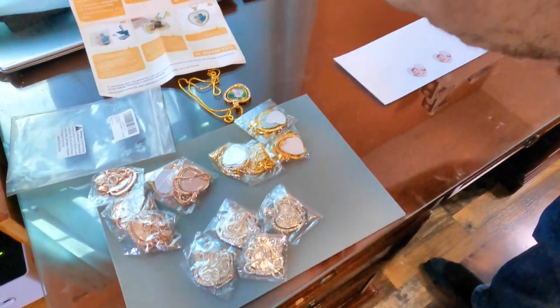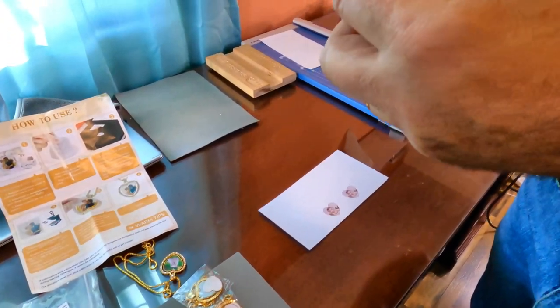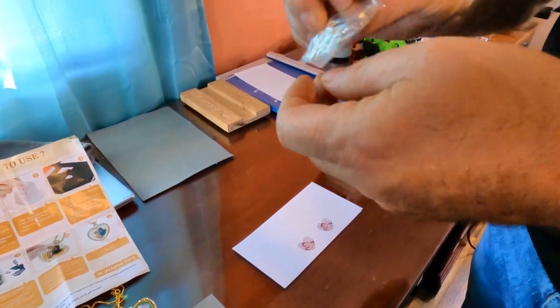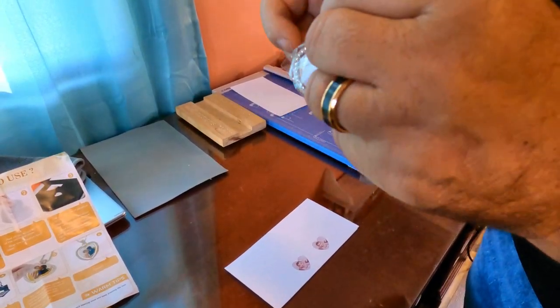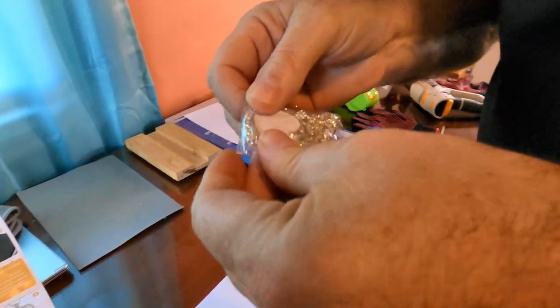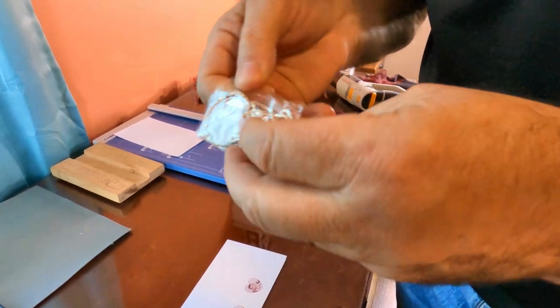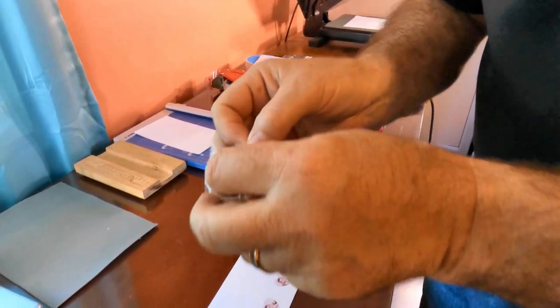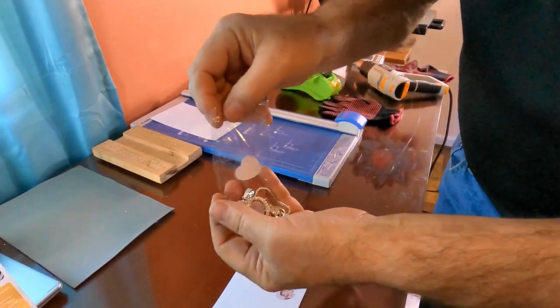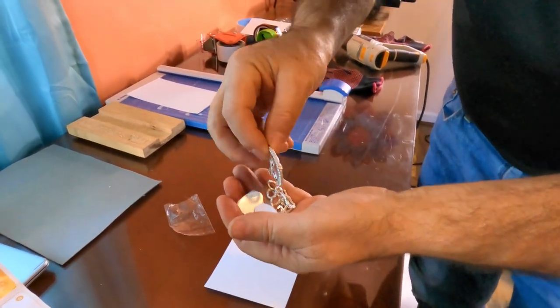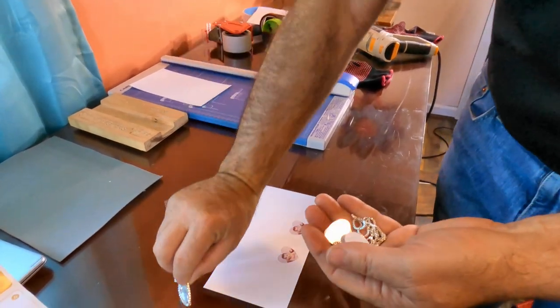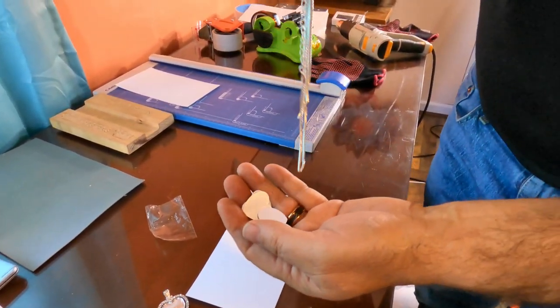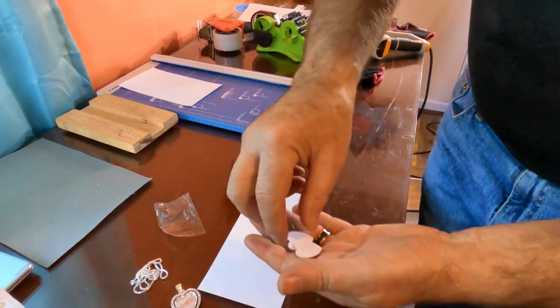The package comes with the necklace, and you open it at an invisible seam right here. It comes with the necklace, the pendant part of the necklace, and a chain.